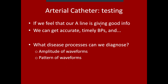Now that we know how the arterial catheter works, how to calibrate it, and its limitations, it's useful to look at case studies and see what disease processes we can diagnose using our A-line alone. The key is looking at the amplitude of the waveforms compared to normal and the pattern of arterial waveforms, which can give valuable clinical information.